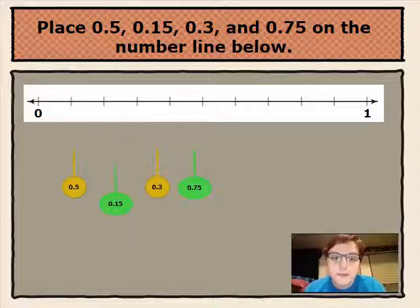Our first placement is fifteen hundredths because the one is in the tenths place and the five is in the hundredths place, so it goes first.